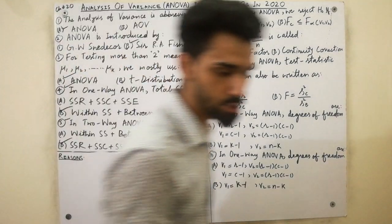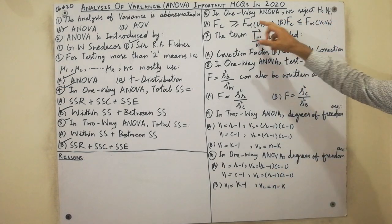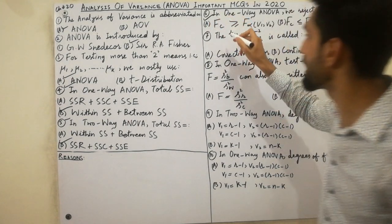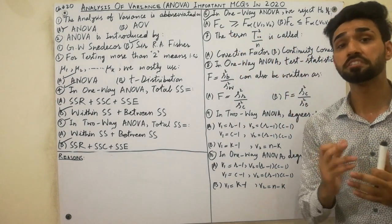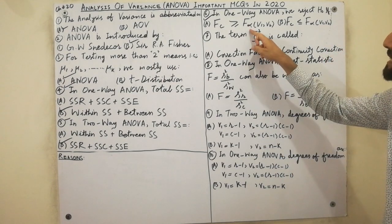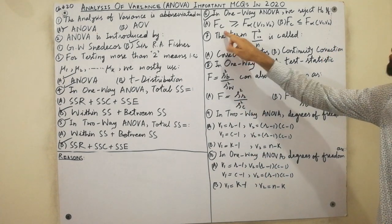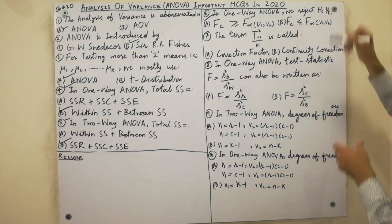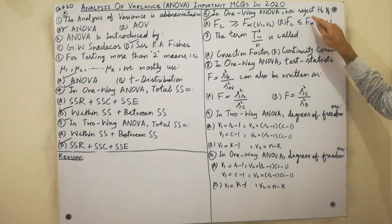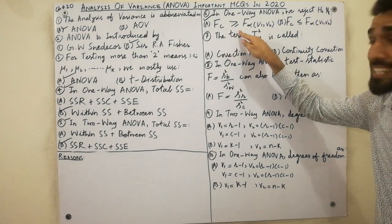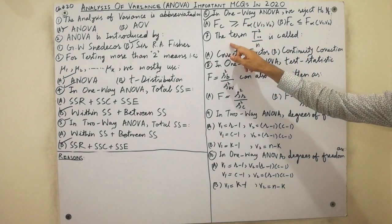The sixth MCQ: in one-way ANOVA, we reject H₀ if the F calculated value is greater than or equal to the F table value — that is F(alpha, v1, v2). If F calculated is greater than or equal to F table, then we reject H₀.